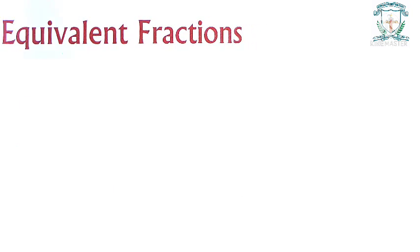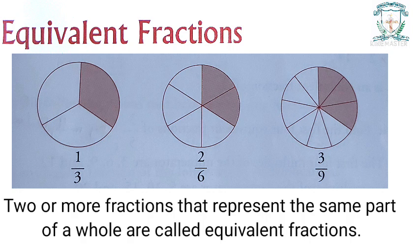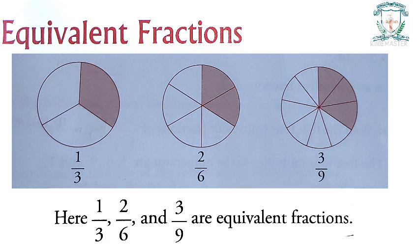Equivalent fractions: let us observe the shaded portion in the following figures. We observe that the fractions for the shaded portions are different although they represent the same part of the whole. Therefore, two or more fractions that represent the same part of a whole are called equivalent fractions. Here, one by three, two by six, and three by nine are equivalent fractions.